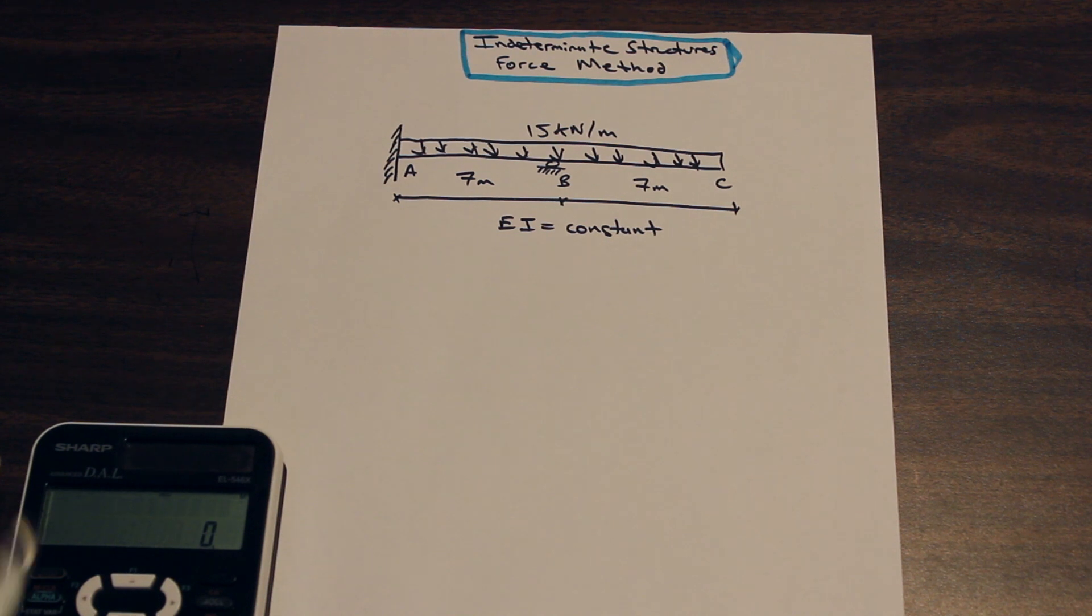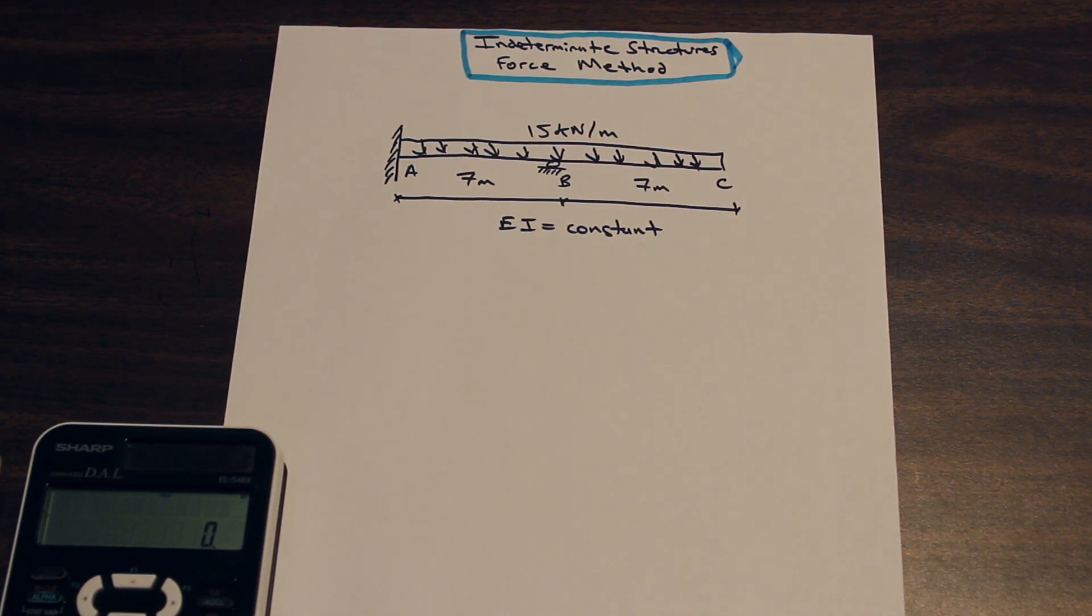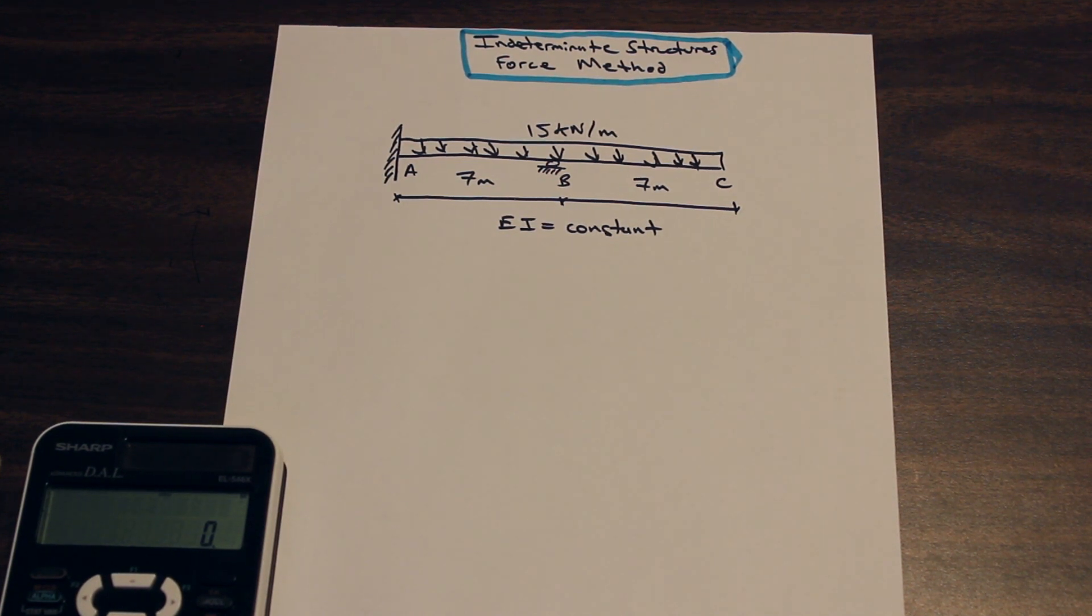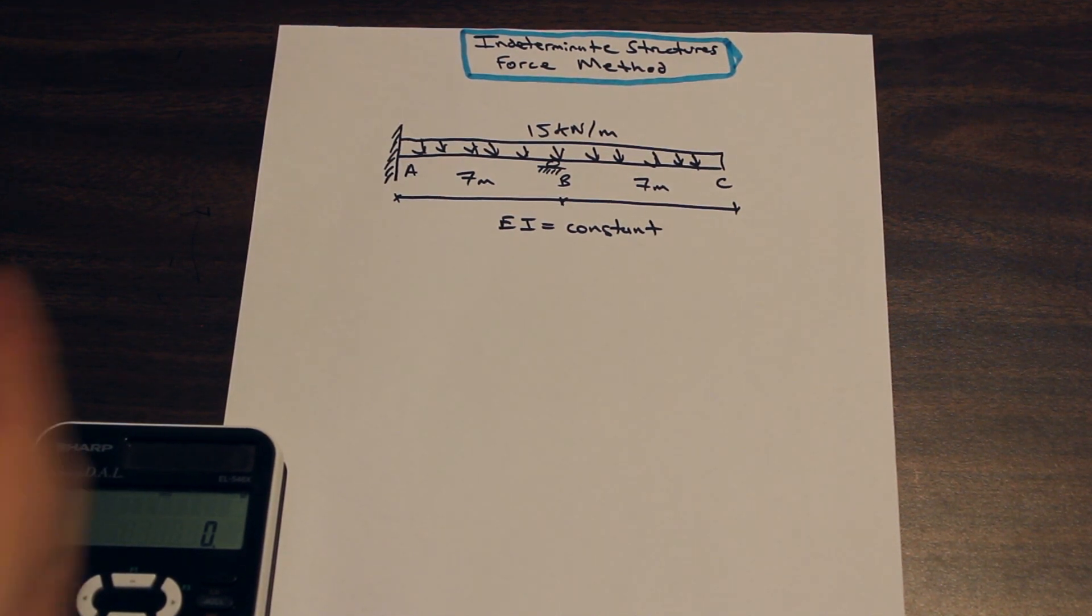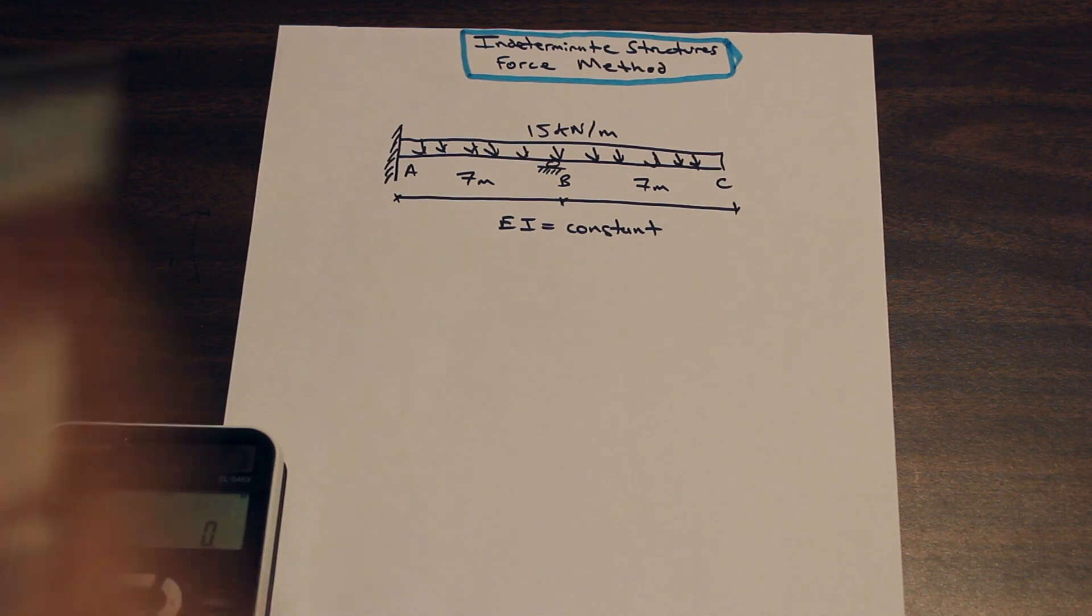And as you know, we can always, in a beam, only have three equations of equilibrium. So we have the sum of the forces in x, the sum of the forces in y, and the moment. So what that means is that we have more unknowns than we have equations, which makes this an indeterminate structure.